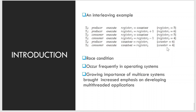Notice that we have arrived at the incorrect state where counter equals 4, indicating that 4 buffers are full when in fact 5 are full. We arrived at this incorrect state because we allowed both processes to manipulate the variable counter concurrently. A situation where several processes access and manipulate the same data concurrently and the outcome depends on the order of access is called a race condition. To guard against it, only one process at a time should manipulate the variable counter.